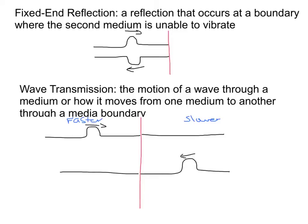Fixed-end reflection. A reflection that occurs at a boundary where the second medium is unable to vibrate. Think of it as something that's attached, so it might be attached to a wall.